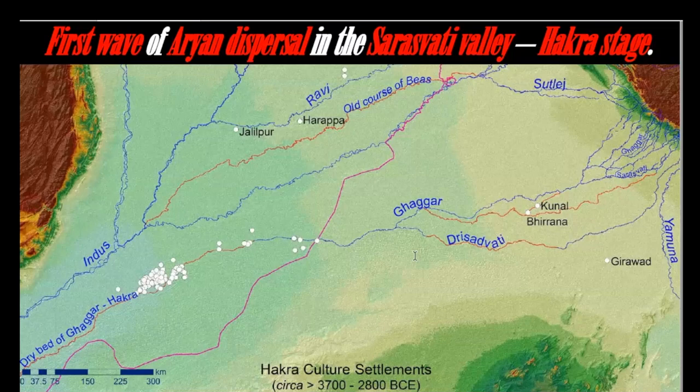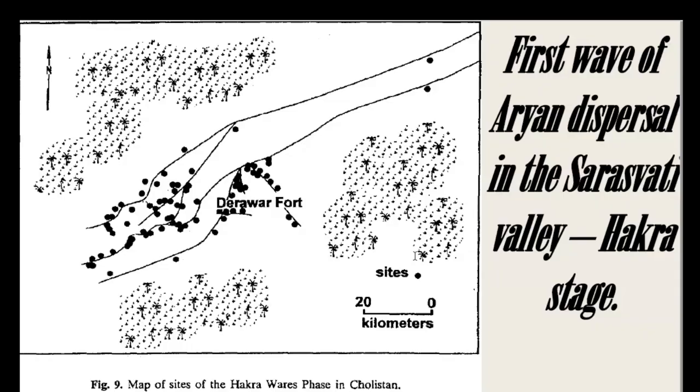The first wave of Aryan dispersal in the Sarasvati valley is the Hakra stage, dating to 3700–2800 BC in the Ghaggar-Hakra valley, with even earlier dates from Kirana still being evaluated. We are sure that in the fourth millennium BC, people started inhabiting this territory. The region around Derawar Fort is very important, as here we have a concentration of settlements — in the Mature Harappan epoch, it was the most important grain-producing region of the whole civilization. These are the settlements of the Hakra-West phase in Cholistan, Iran, around Derawar Fort.